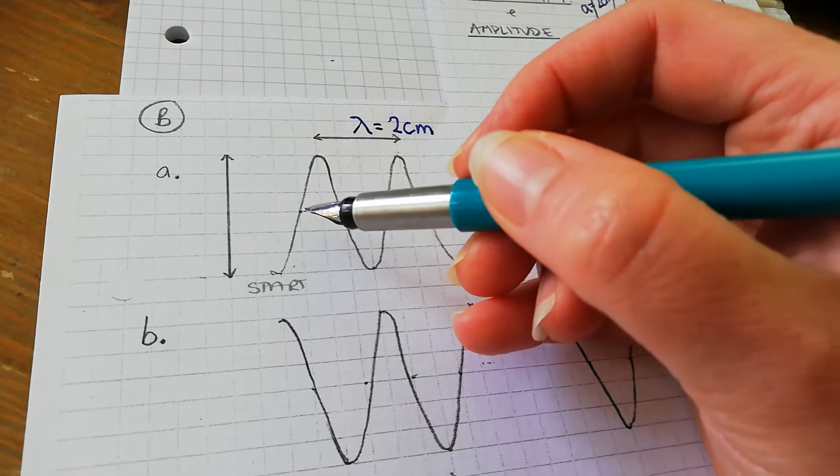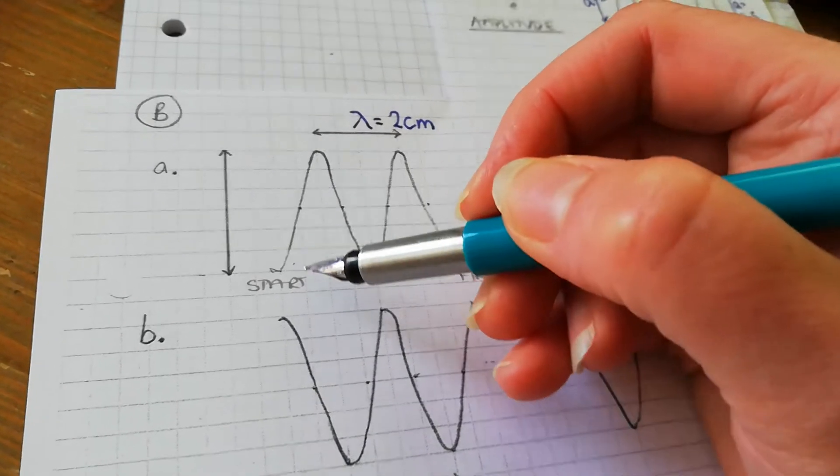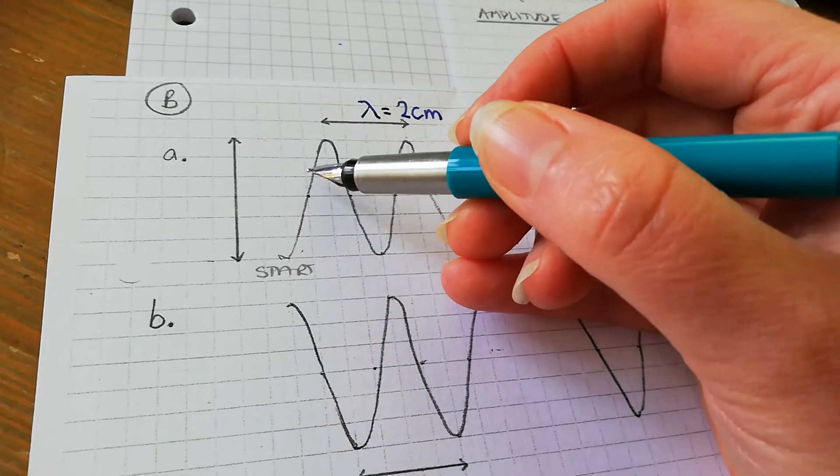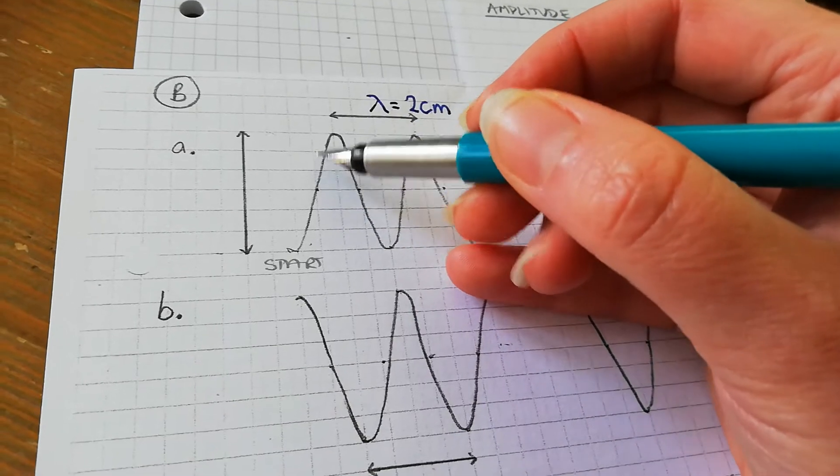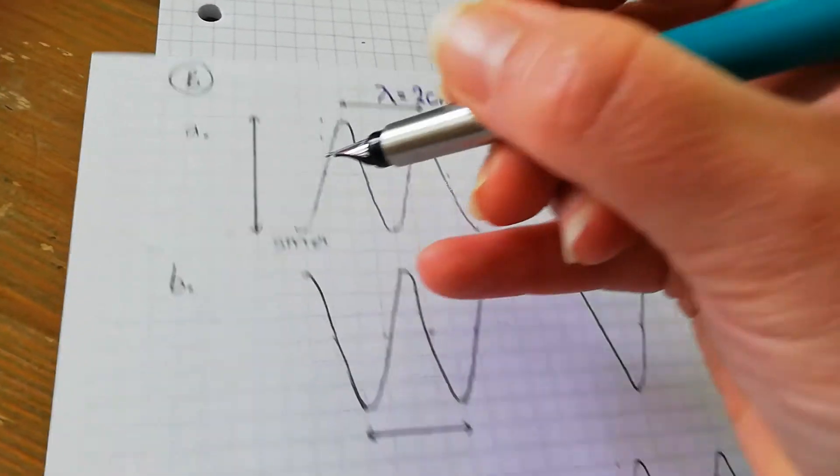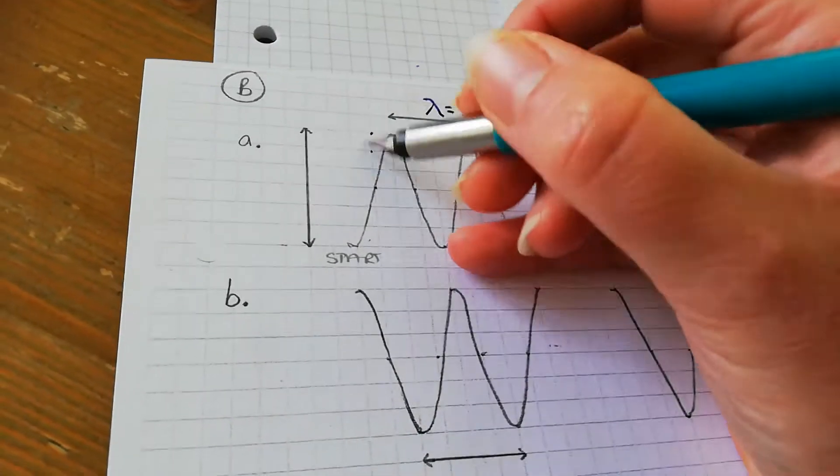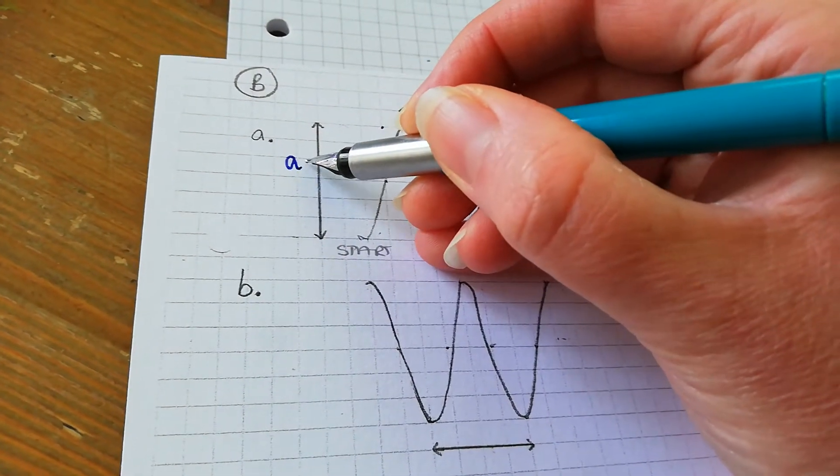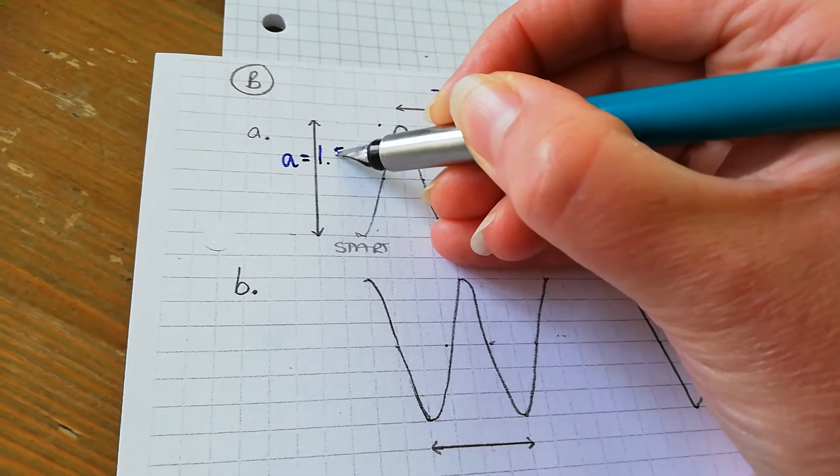Do you remember that the amplitude isn't the full height of the wave, it's half the height of the wave, which is one, two, three boxes. So the amplitude here is 1.5 centimeters.